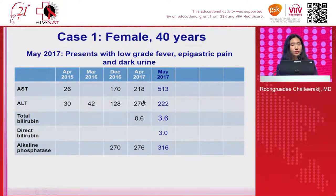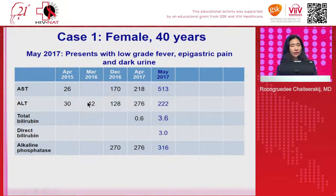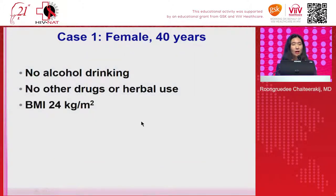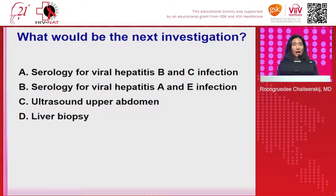Looking back at her liver function test done earlier during the past year, the ALT elevation had been increasing during the past year. She said she has no history of alcohol drinking or taking any other drugs or herbal medicine. She was not obese. If you were the primary physician, what would be the next investigation for this patient?